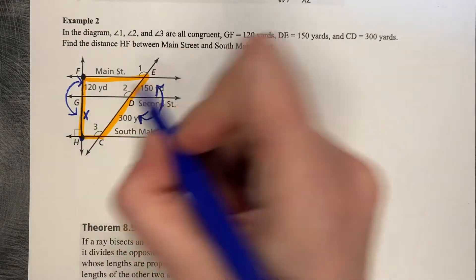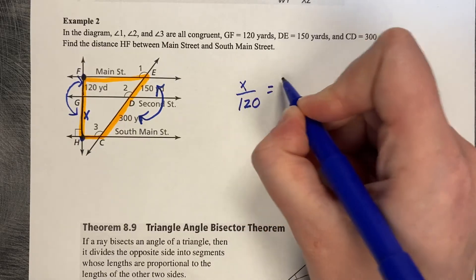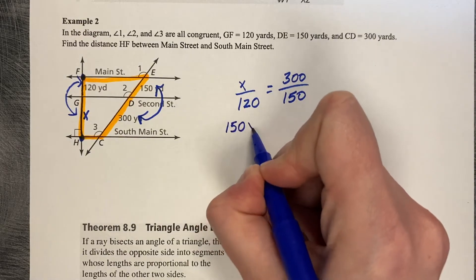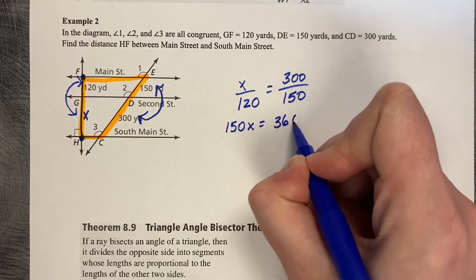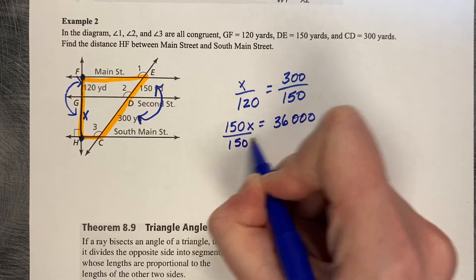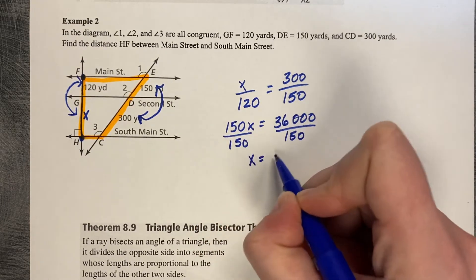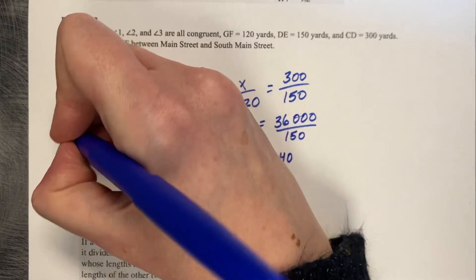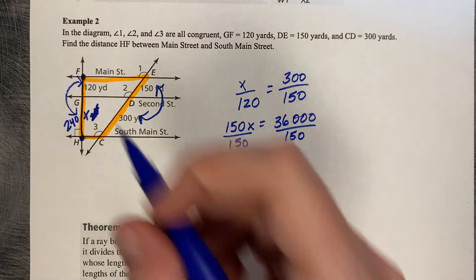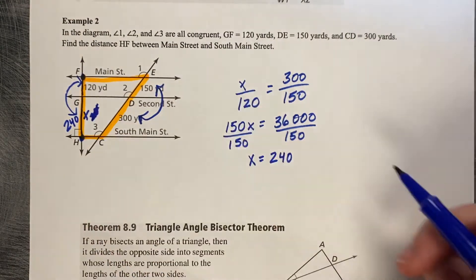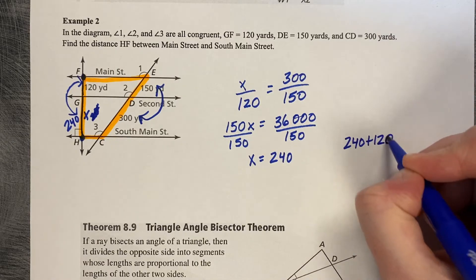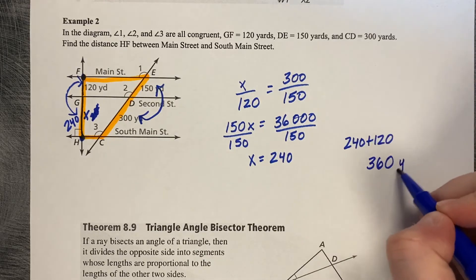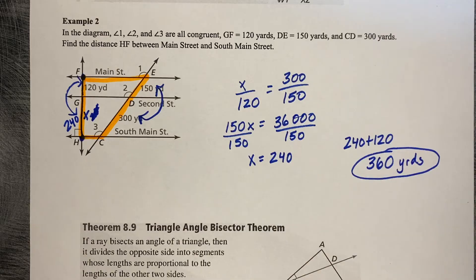So we can say X is compared to 120 as 300 is to 150. Cross-multiply: 150X equals 36,000. Divided by 150, X equals 240. So that means that this length is 240. But they want to know the whole length, so we can just add those together. 240 plus 120 makes it 360 yards total.